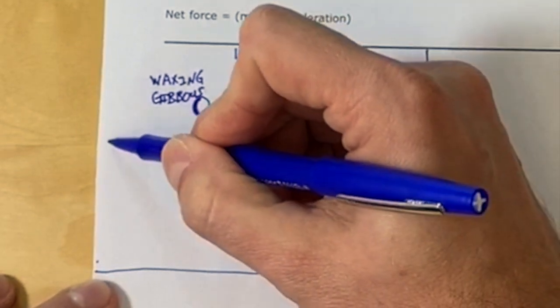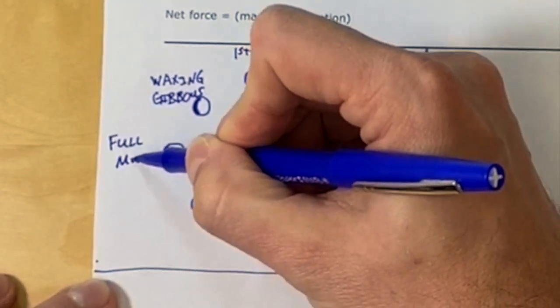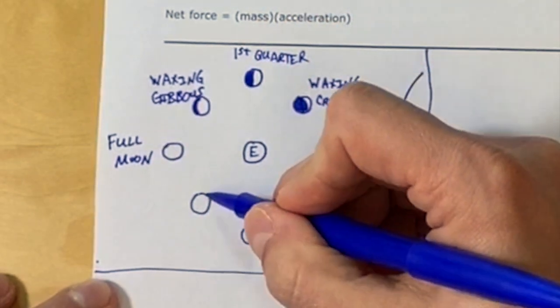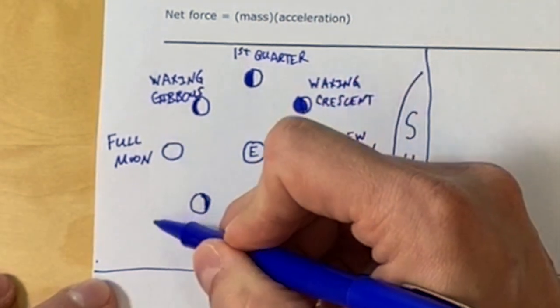And then finally, when the earth is between the moon and the sun, this is a full moon, and we see the full reflection of the sun on the moon.